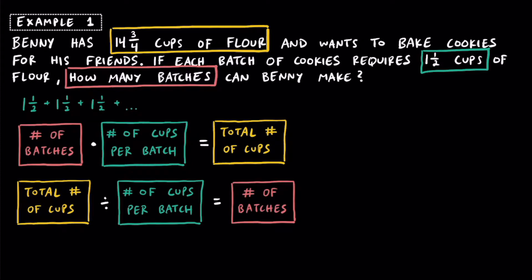Let's go ahead and plug some numbers in. The total number of cups of flour that Benny has is 14 and 3 quarters cups. We're going to take that and divide it by the number of cups per batch, which is one and a half cups of flour per batch. This is going to equal the number of batches that Benny can make.